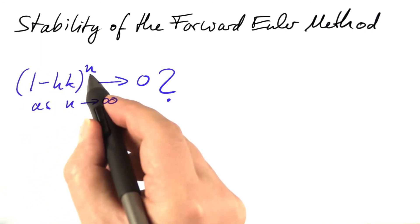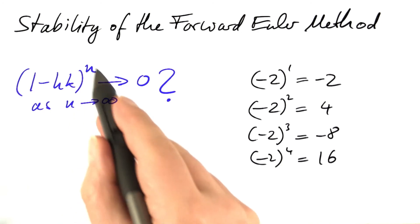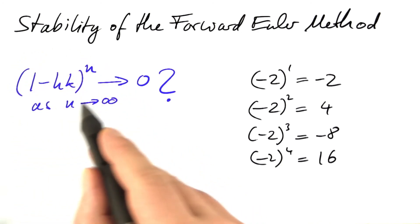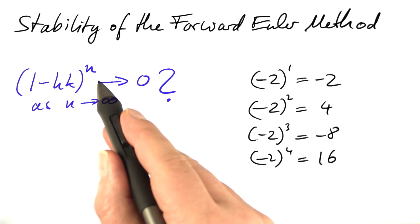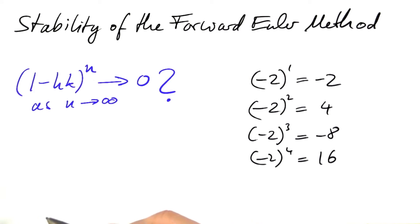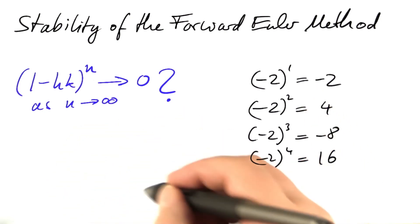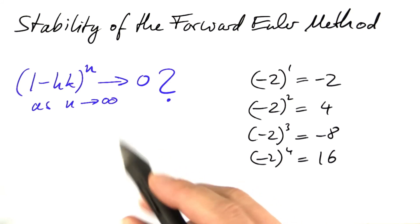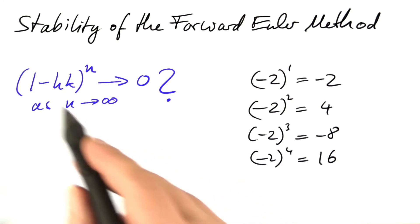As an example, what happens if the inner expression equals minus 2, and we take the first, second, third, fourth, and so on power? Minus 2 to the first power is minus 2. Minus 2 to the second power, squared, is 4. The third power, cubed, is minus 8. The fourth power is 16 and so on, which means that this expression, the nth power, would explode. This is precisely not what we want for a stable solution.